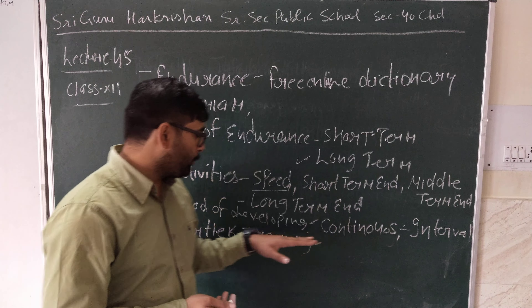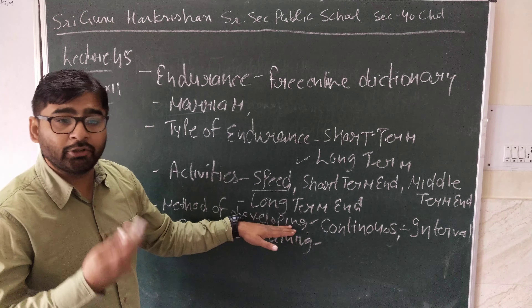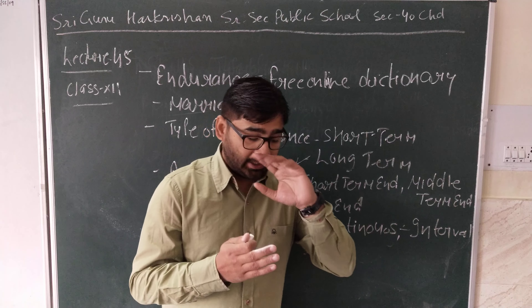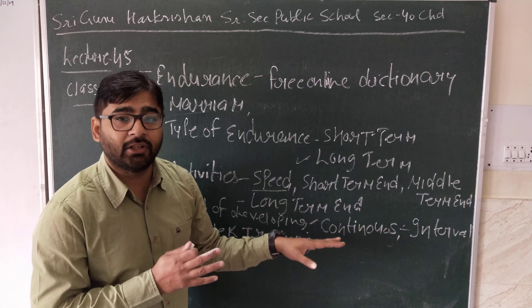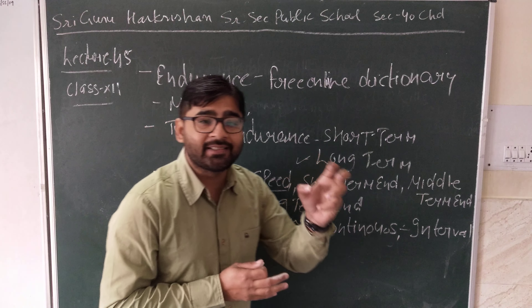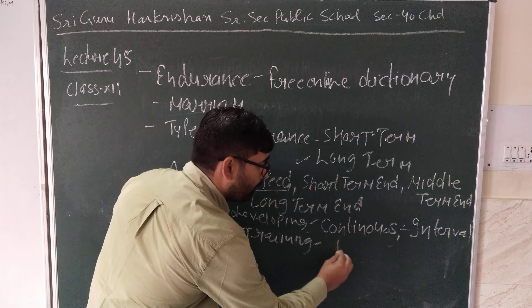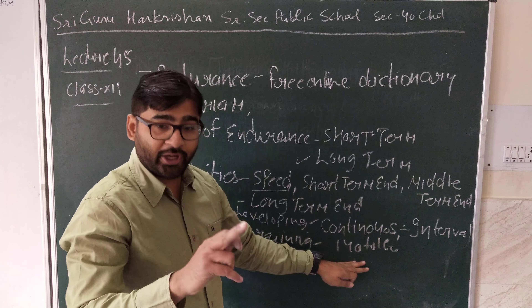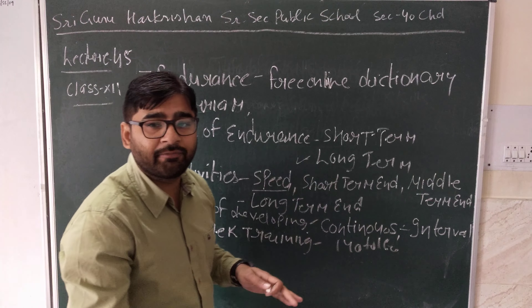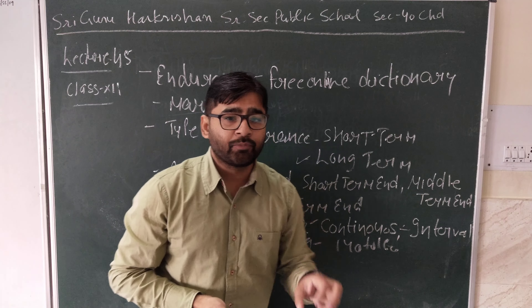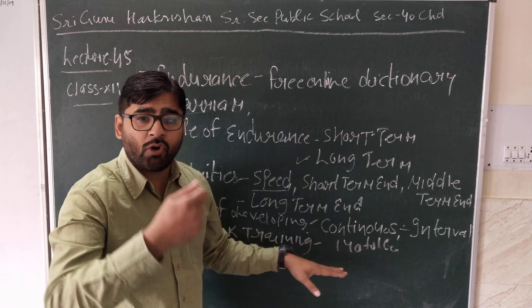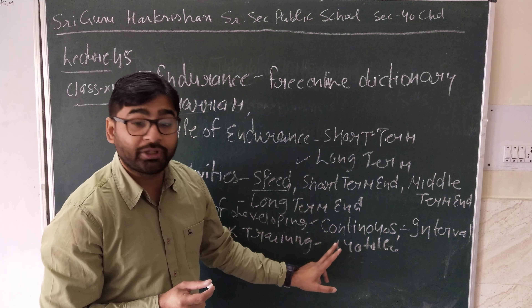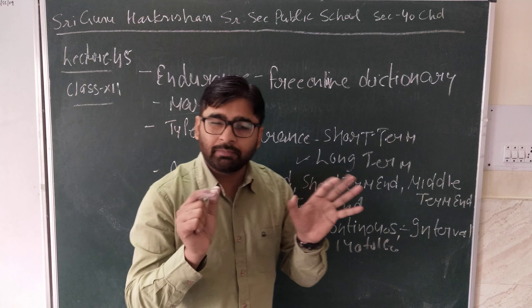Now we discuss the methods of developing endurance. The first is the continuous training method. It is the best method to develop endurance and is also known as long slow distance training. In this method, intensity is kept slow and heart rate is maintained at 140 to 160 beats per minute. This method involves working for a long period of time without any rest or break. The advantage is that it is very good for the cardiovascular and respiratory system. The disadvantage is that it can be boring and does not improve sprinting skills.